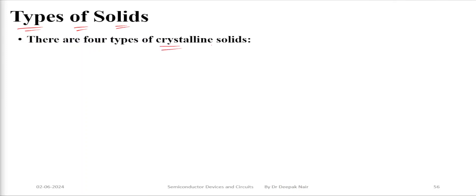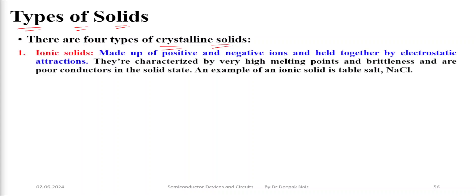If we talk about crystalline solids, there are four different types available. The first one is ionic solids. These are made up of positive and negative ions held together by electrostatic attraction. Examples include salt, NaCl or sodium chloride. These materials generally have very high melting points, they are brittle in nature, and are generally very poor conductors of electricity.